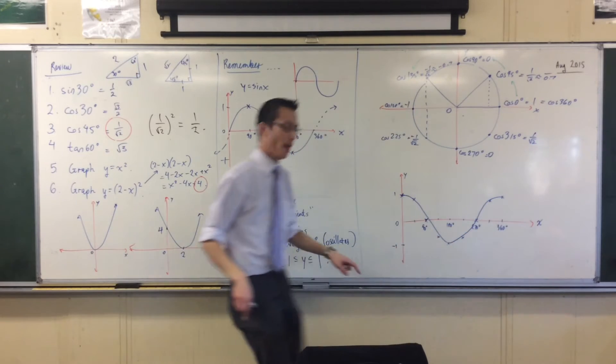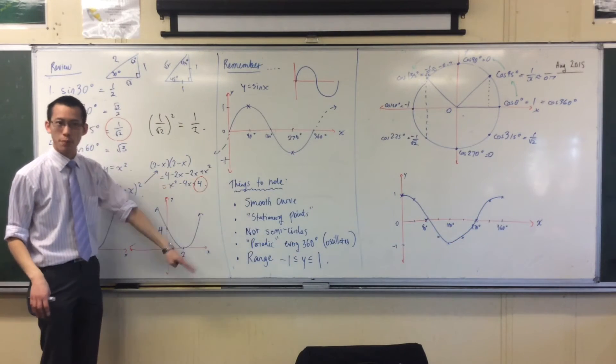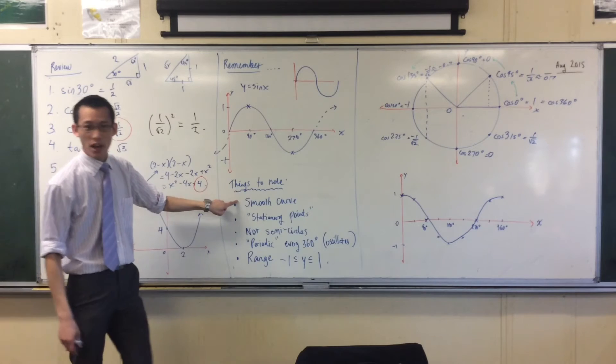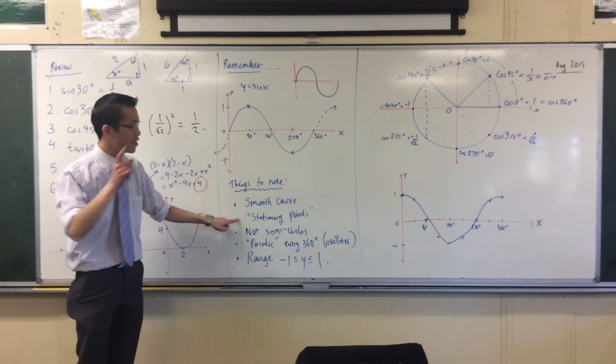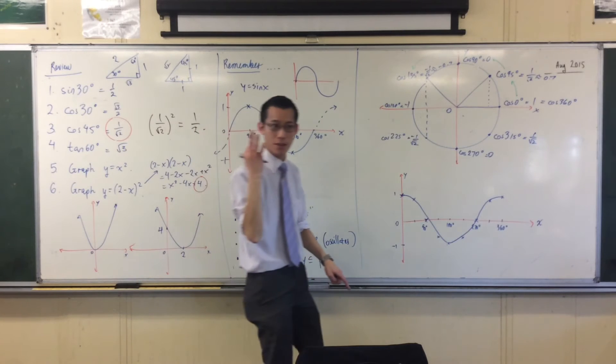Now, just for a second, compare. We have all these things to note from sine, right? Smooth curve, same deal. Stationary points, same deal, except in this case, we can actually see three of them. Do you see the three? There's two high ones, and then there's a low one.